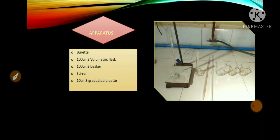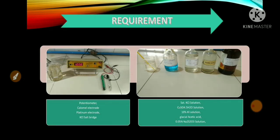Apparatus required for the estimation of copper are: burette, 100 cm³ volumetric flask, 100 cm³ beakers (×2), stirrer, 10 cm³ graduated pipette. Other requirements are a potentiometer which is calibrated and standardized, calomel electrode, platinum electrode, and KCl salt bridge.